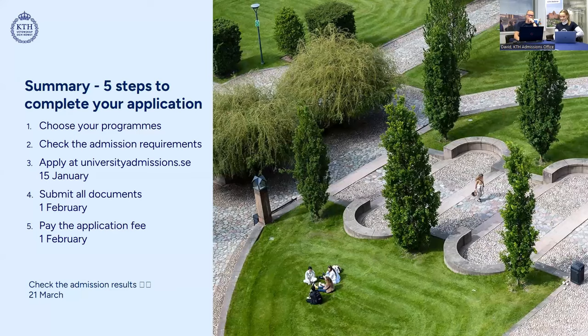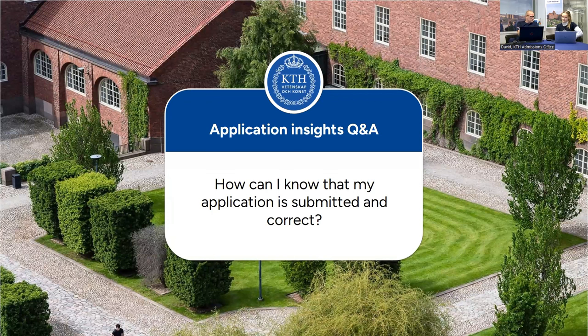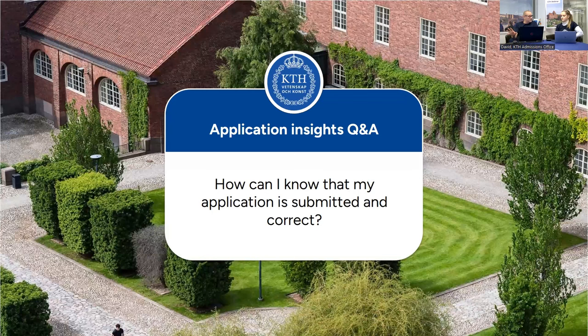A common Instagram question: 'How can I know that my application is submitted and correct?' People apply and then five minutes later send an email asking if everything is in order. It's basically your responsibility to see to it that you have everything in there. To confirm it's submitted and that you have all the documents, you can log in to university admissions and see your own uploaded documents. If you can see them and your application status shows 'submitted,' then it's submitted. Whether everything is correct is your responsibility.